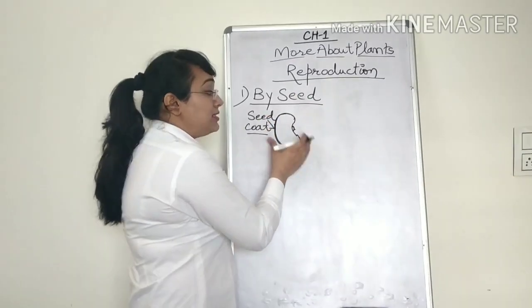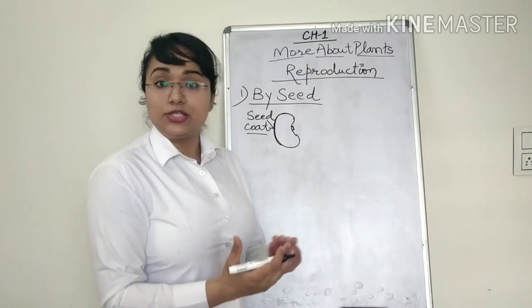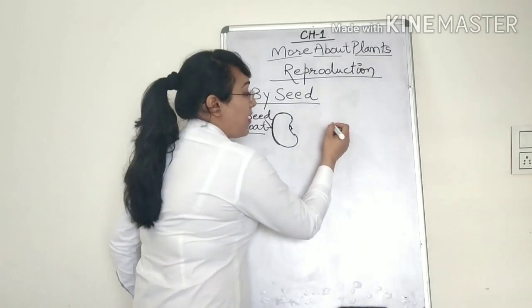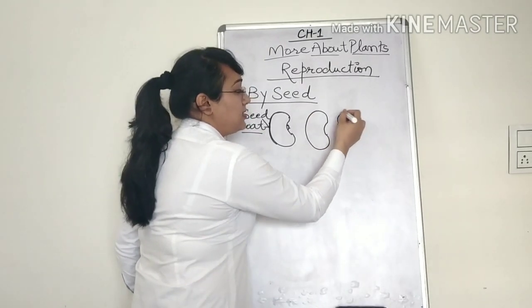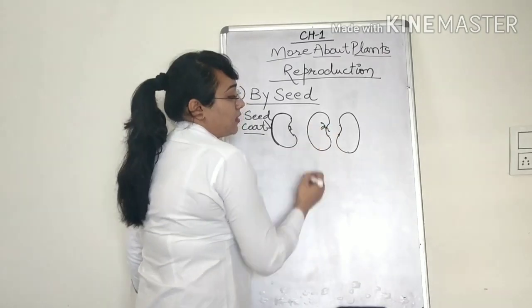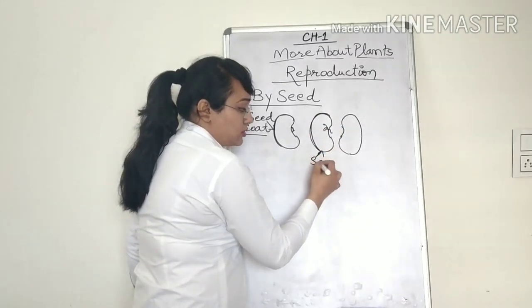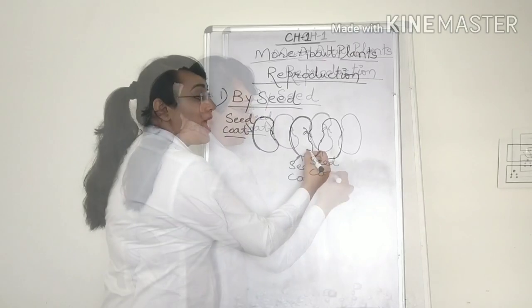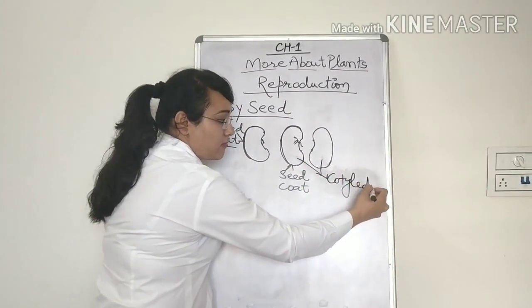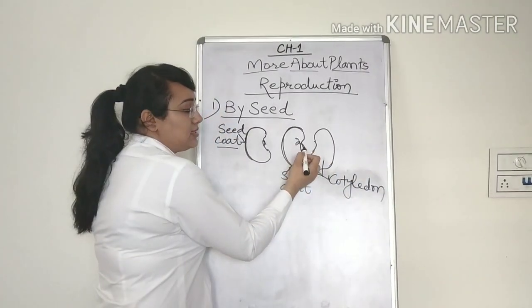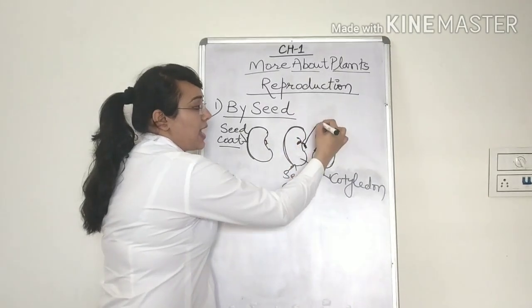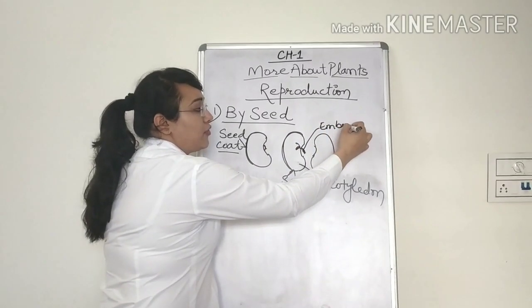Now if you dip this seed into a moist towel and keep it overnight and then try to open it, you will find a structure of the kidney bean something like this. This is again your seed coat. And these two leaves are called cotyledon. Now here you can see a small thing. This is called an embryo. Now what is an embryo? This is a baby shoot.